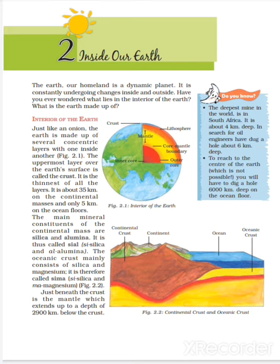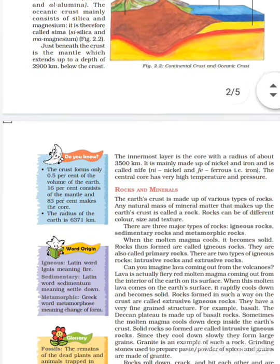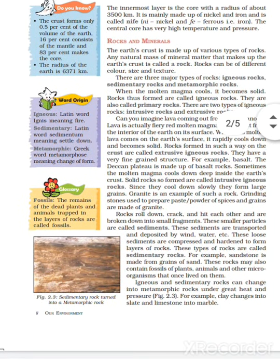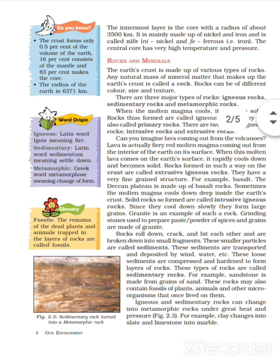The deepest mines in the world go only about 6 km deep. If we want to go to the center of the earth, we would need to dig 6,000 km. Below the mantle is the core, which has a radius of about 3,500 km. It is made up of nickel and iron and is called NIFE. The central core has very high pressure and temperature.